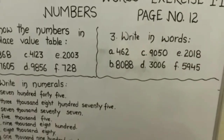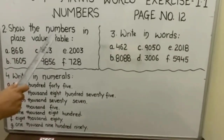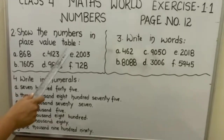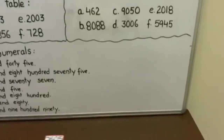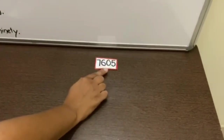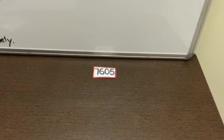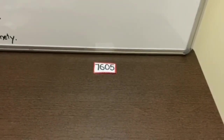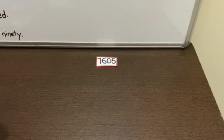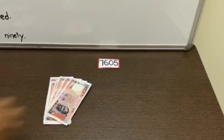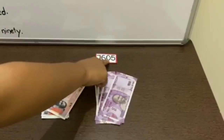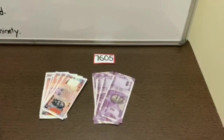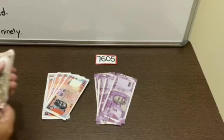Here are the questions written on the board. Question number 2 is: show the numbers in a place value table. We will solve part B. The number in the question is 7,605. First of all, we will take the currency notes according to the number given. There is no digit at the tens place, so we will not take any 10 rupee note, and then 5.